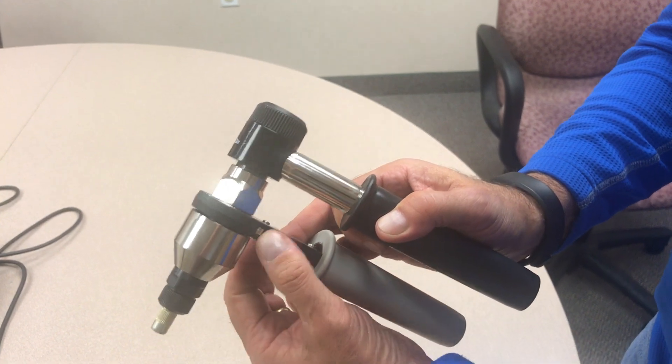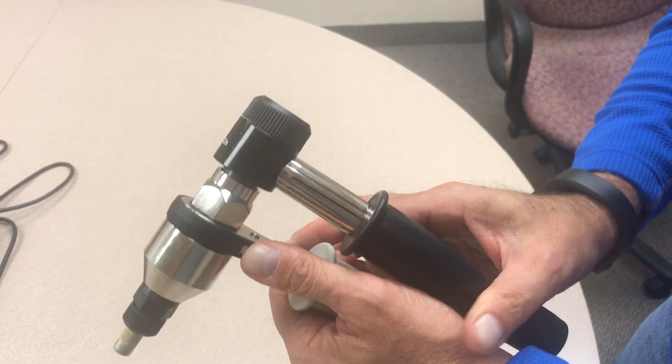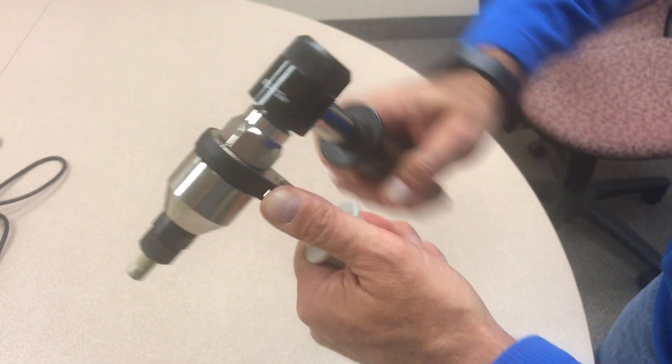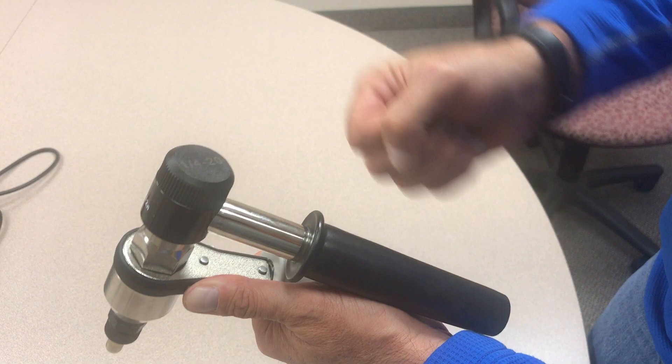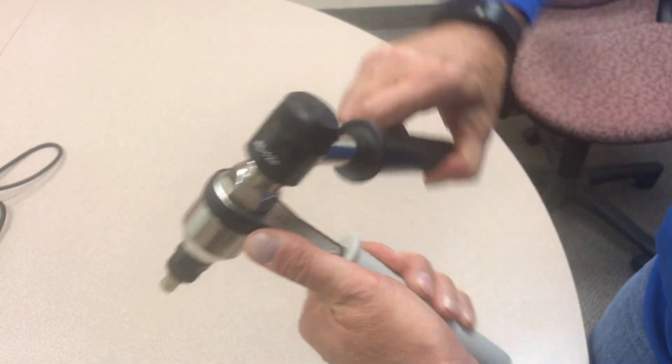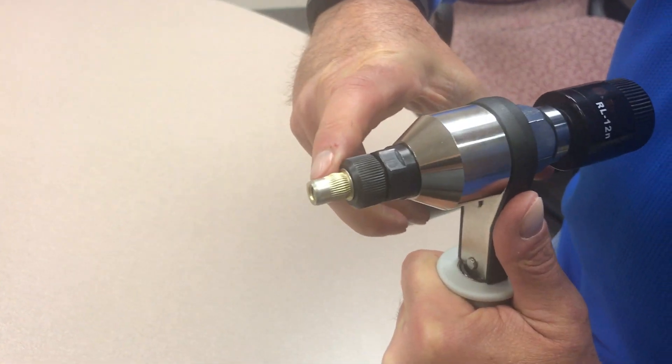Once that's done, put this side up so it's tight, then start rotating the rear handle counterclockwise. As I rotate it, you'll see that the nut itself is not rotating—it's tight there—and we are getting the bulb being formed.